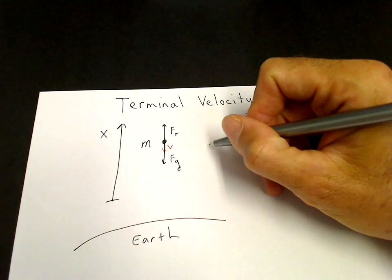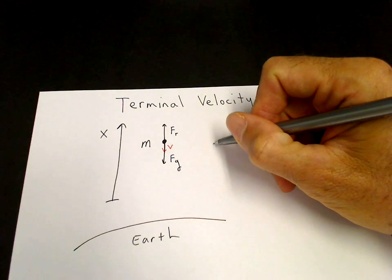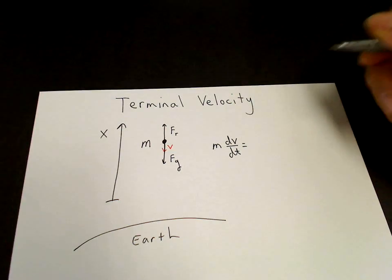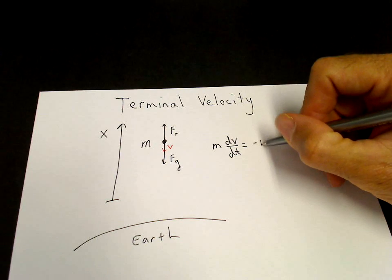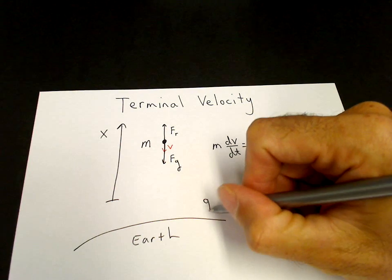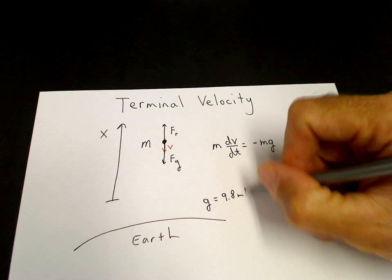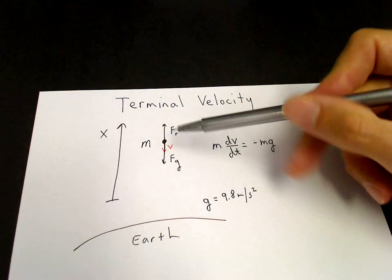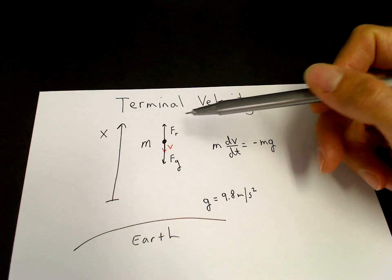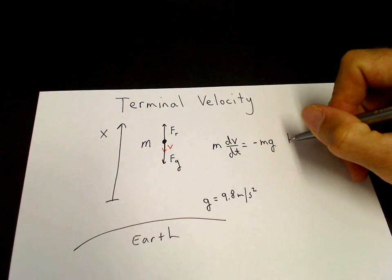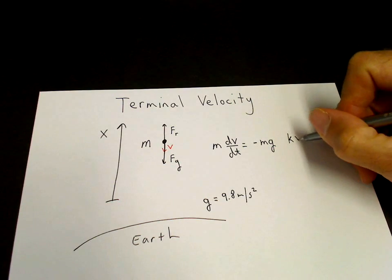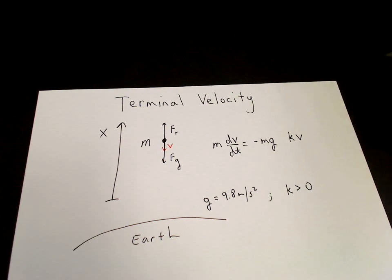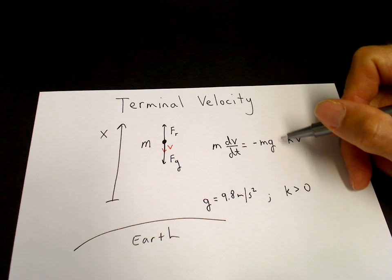We want to model these forces. We write down Newton's equation. So mass times the acceleration, which we write as dv/dt, is equal to the gravitational force, which is minus mg. G is the usual 9.8 meters per second squared, defined as positive. So the force is in the negative direction. And then a force due to air resistance, which is proportional to the velocity. The proportionality constant is k times the velocity. K is a constant which we'll take to be a positive proportionality constant. And then there's a sign here, a plus or minus sign.